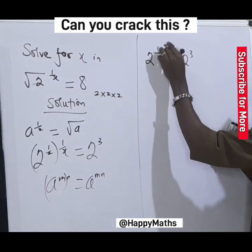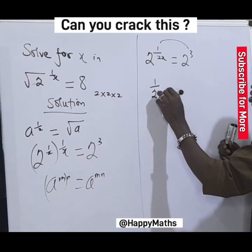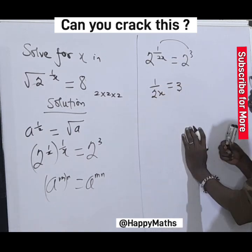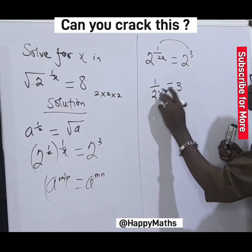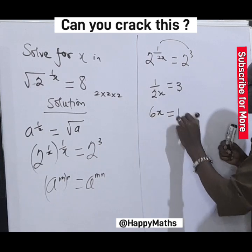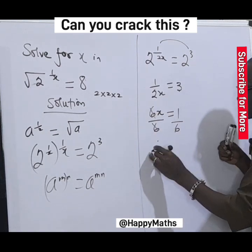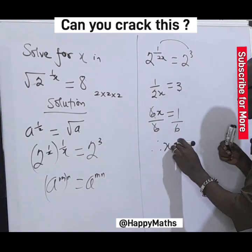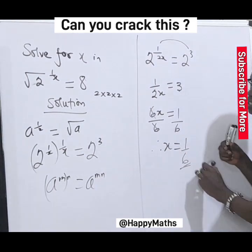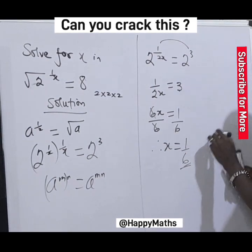Since the bases are the same, we equate the powers: 1 over 2s equals 3. Cross multiplying, 2s times 3 gives us 6s equal to 1, therefore s is equal to 1 over 6. That is the answer.